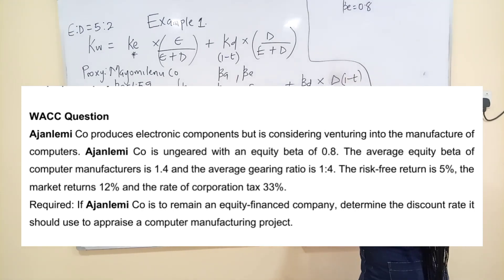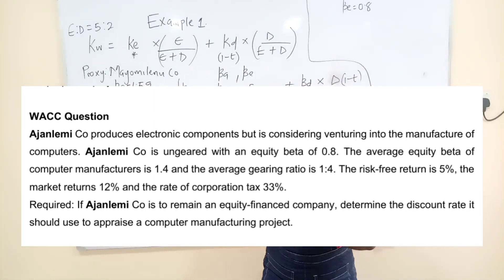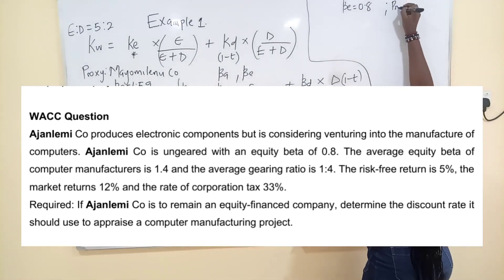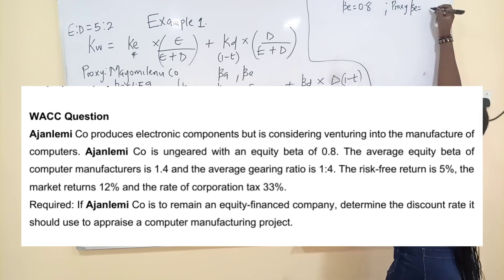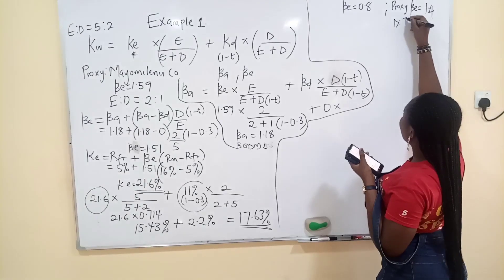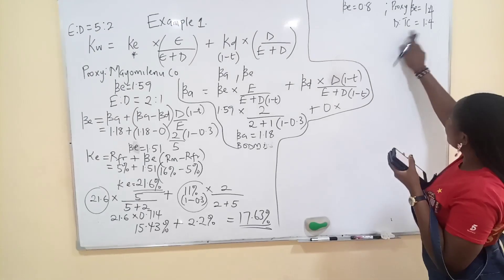Equity beta of what? 0.8 of Agileme Co. The average equity beta of computer manufacturers, that's in the book, computer manufacturers, they are a proxy company. They didn't give you a specific name. The average equity beta, that is for proxy, their own equity beta is what? 1.4. And the average gearing ratio, gearing ratio, that is debt to total capital, when you say something is a gearing ratio it means debt to total capital, is equal to what? 1:4. So equity here will be 3 if debt is 1 and total capital is what? 4.